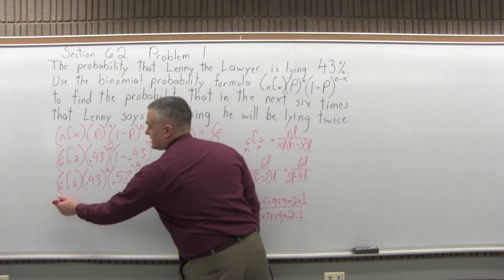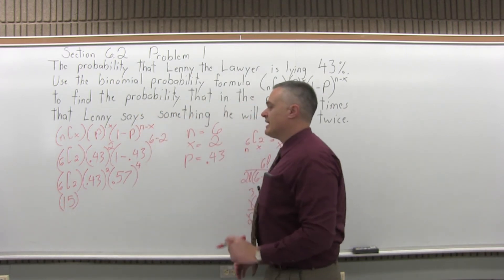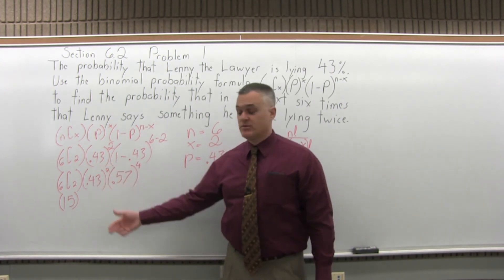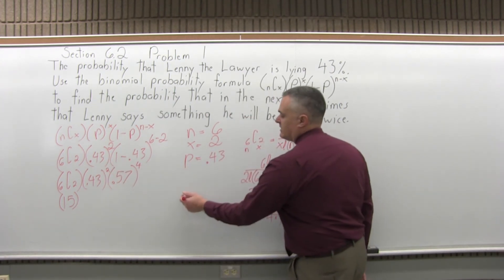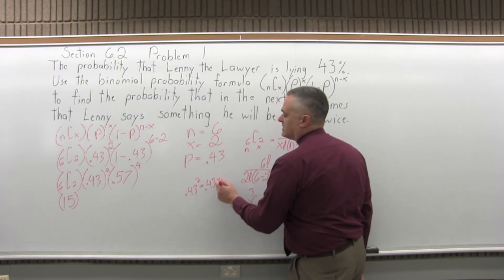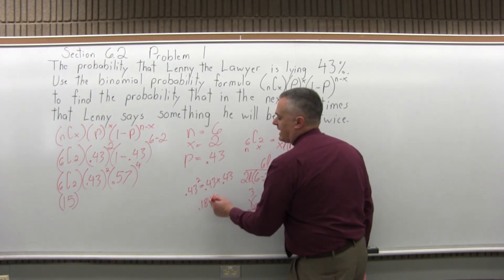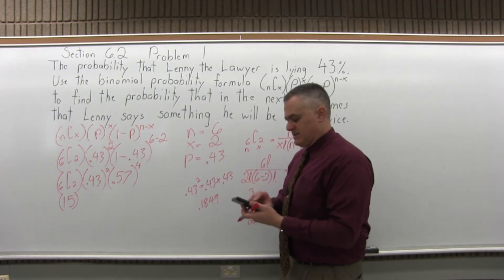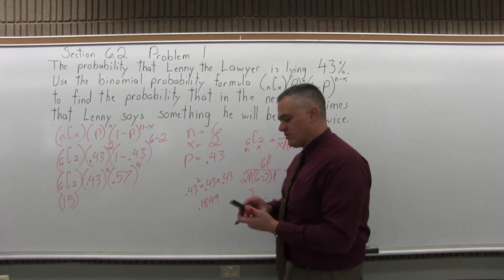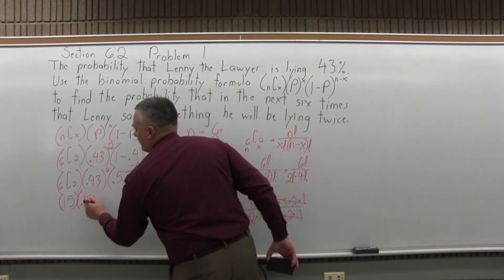So our first set of parentheses gives 15. Now for the middle parentheses: 0.43 to the second power is 0.43 times 0.43, which equals 0.1849. So the middle parentheses gives 0.1849.